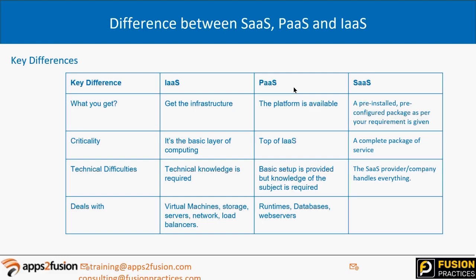When we go for SaaS licensing, we don't get server access or database access. If we go for PaaS, we get database access. If we go for IaaS, we get server access as well. In SaaS, we cannot customize workflows, whereas in EBS you could easily do so. To customize workflows, you need PaaS licensing — platform as a service — giving access to middleware components for customization.